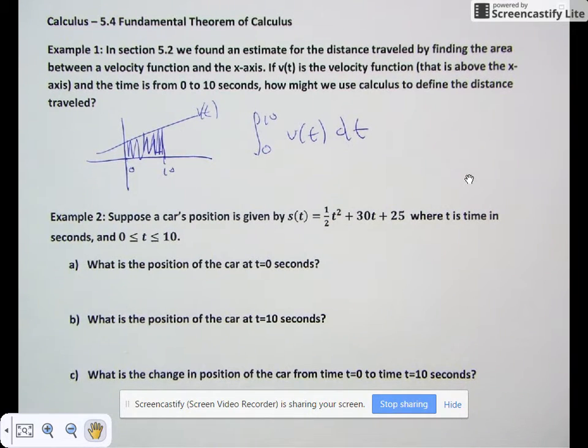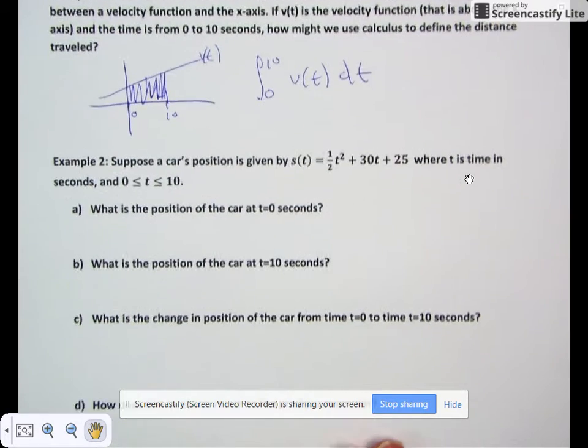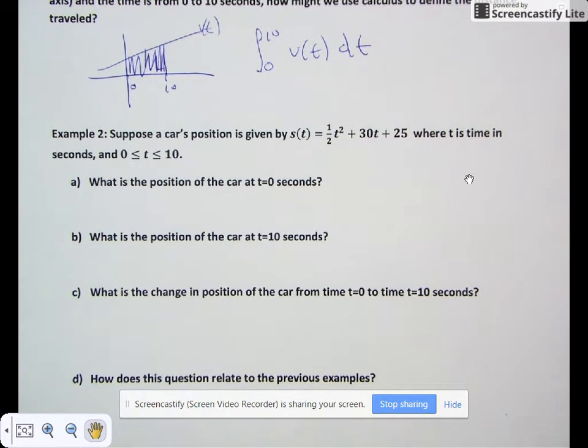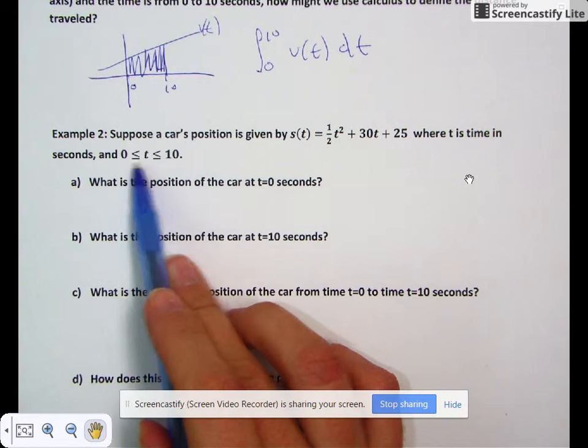Let's look at our second example. Suppose a car's position is given by s(t) = (1/2)t² + 30t + 25, where t is time in seconds, and 0 ≤ t ≤ 10.